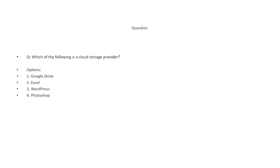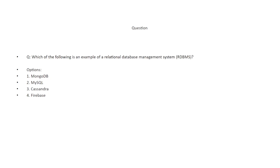Which of the following is a cloud storage provider? The options are: Google Drive, Excel, WordPress, and Photoshop. This is very easy — the correct answer is Google Drive, which is a very popular and well-known cloud storage provider.